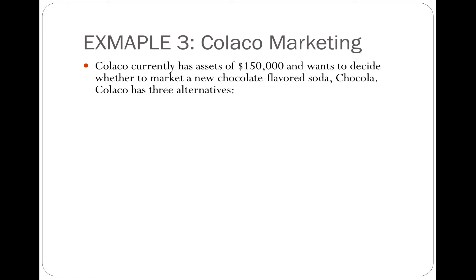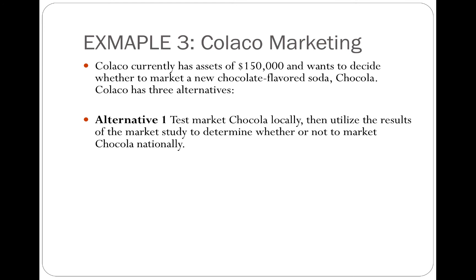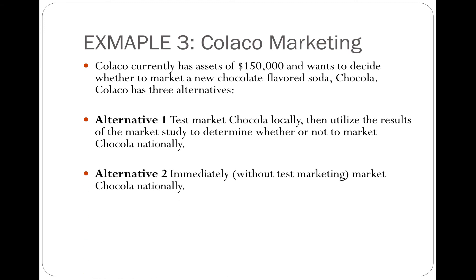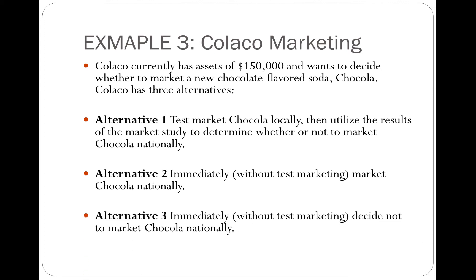They want to decide whether to market a new type of soda, which is chocolate-flavored. For this purpose, they have three alternatives. Their first alternative was to do local marketing, and based on the result of the local market, make a more educated decision on whether to market nationally or not. Their second alternative was to immediately market nationally without doing local testing. Their third alternative was to decide not to market the new product at the national level.